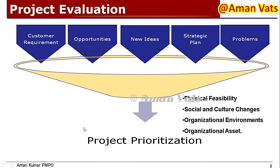When selecting or prioritizing a project, we look for feasibility: physical feasibility — whether the organization is really capable of it. Second is social and cultural change. Third is organizational environment. Fourth is environmental assets. For example, if an organization is working in information technology, you cannot expect them to take on a construction project, or a software development firm may not go for hardware implementation.